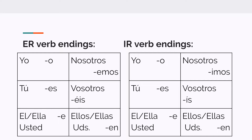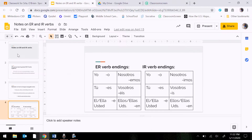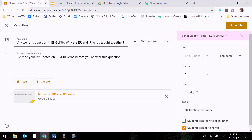And then for IR verbs, you have: -o, -es, -e, -emos, -ís, and -en. So once you read through your PowerPoint, go back into your classroom, answer the question, and then you are all set.